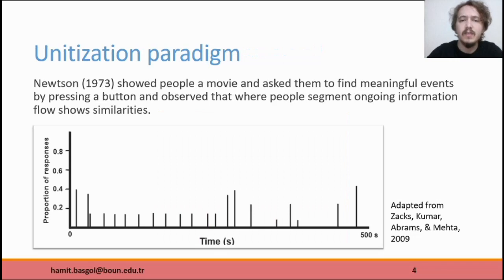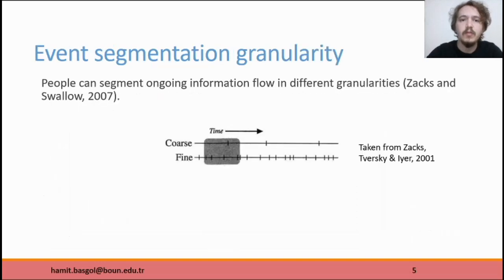Event Segmentation is studied through a simple paradigm called unitization developed by NetSafe. He asks people to find meaningful events in a movie by pressing a button and observe where people's segments are similar. These points are called event boundaries. There is an important property of event segmentation, which is segmentation granularity. It refers to the fact that people can segment activity in different granularities.